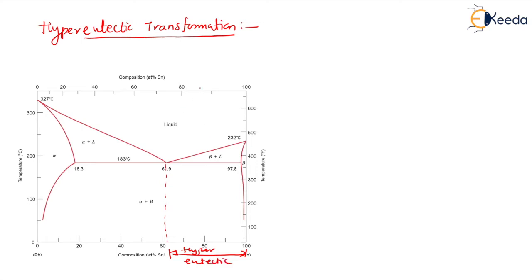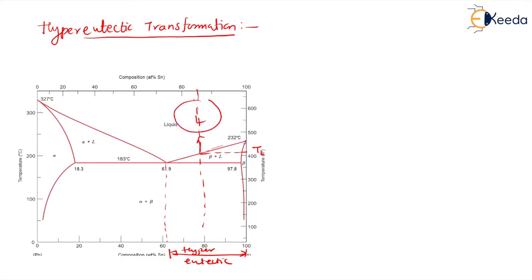Let us consider a line in the hyper-eutectic region. This is the liquidus line, and I am saying that this temperature is TL. Above this TL temperature, everything is liquid.